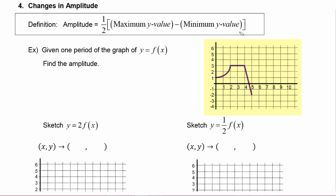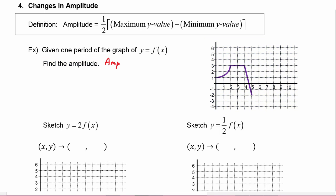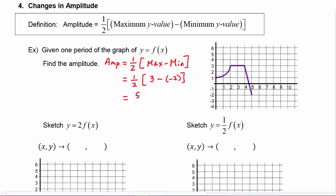In this first example we're given one period of the graph of f(x) and we are being asked to find the amplitude. Amplitude is equal to one-half of the max minus the min. From the graph, the maximum y-value is three and the minimum y-value is negative two. Three plus two is five, and half of five is five-halves, so the amplitude is five-halves.